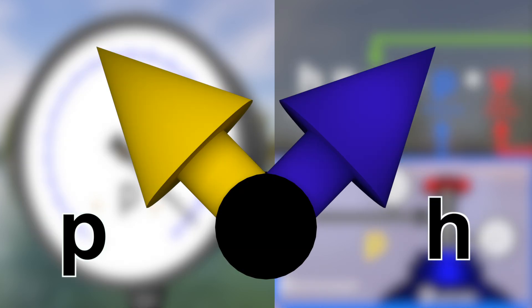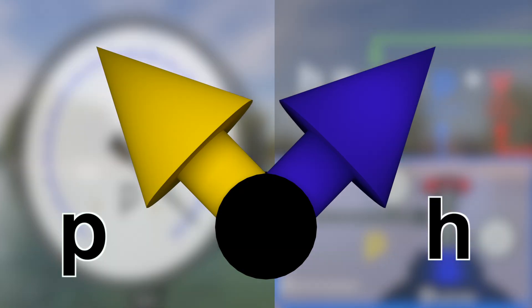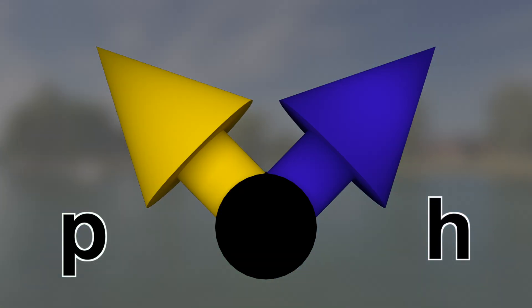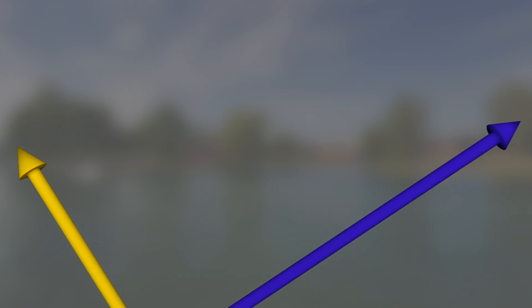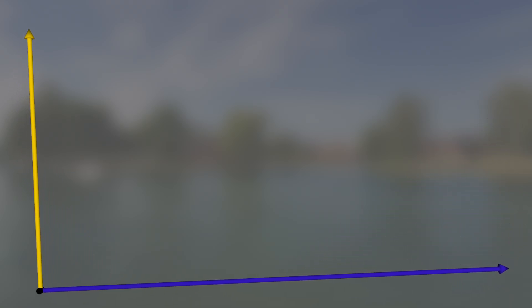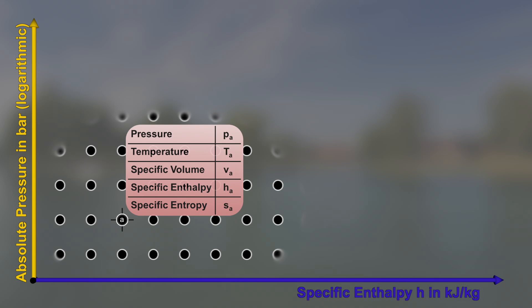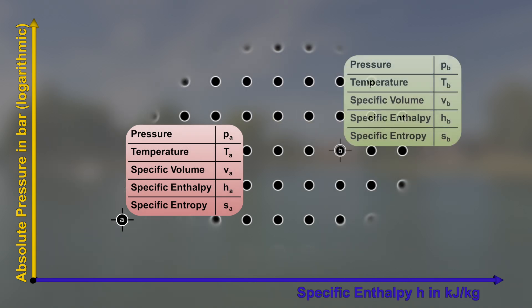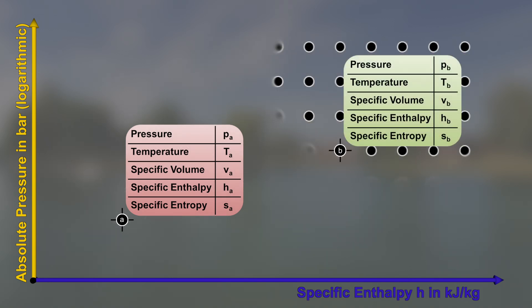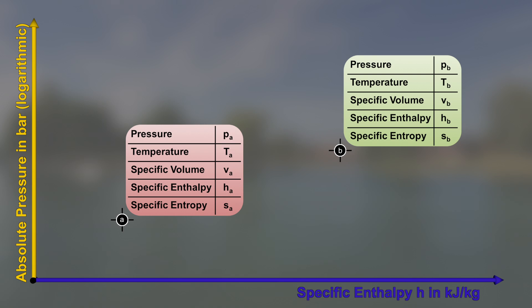The absolute pressure p is plotted on the vertical axis. The specific enthalpy h is plotted on the horizontal axis. Each point in the diagram corresponds to a state of a fluid, and its state variables have certain values: pressure p, temperature T, specific volume v, specific enthalpy h, and specific entropy s.